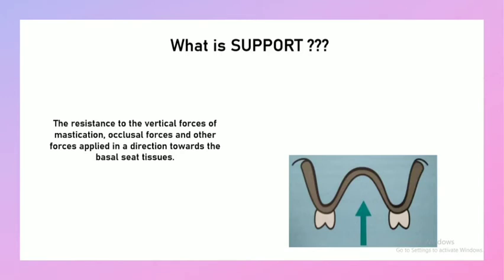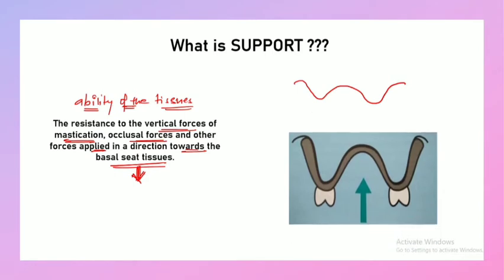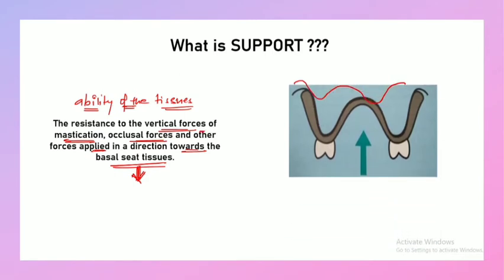How do you define support? Support is considered as an ability of the tissues to resist the vertical forces of mastication — that is your occlusal forces — and other forces applied in the direction towards the basal seat tissues. Basal seat tissues mean the tissues on which your denture is going to seat or rest. So, any force applied in this direction and the ability of the tissue to resist is known as support.